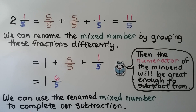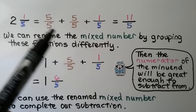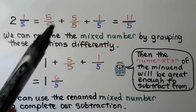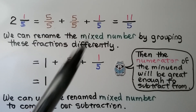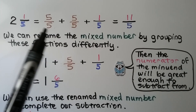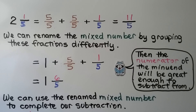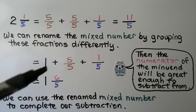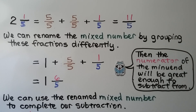Our minuend was 2 and 1 fifth. We can rename it as 5 fifths for 1 whole, another 5 fifths for 2 whole, plus the 1 fifth — that would be 2 and 1 fifth. Because all of the denominators are the same, we can just add the numerators: 5 plus 5 plus 1 is 11 fifths. We can rename the mixed number by grouping these fractions differently — 1 whole plus 5 fifths plus 1 fifth — that would be 1 and 6 fifths. Then the numerator of the minuend will be great enough to subtract from.